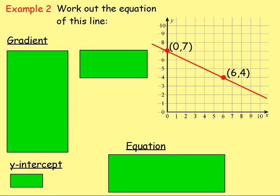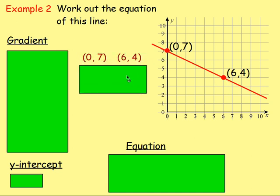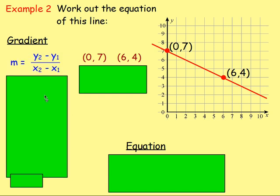Example 2: work out the equation of this straight line. We've got the red line drawn in with two points — 0,7 and 6,4. Let's start by writing down those two points. We need to work out the gradient first, using the formula y2 take away y1 over x2 take away x1. It helps to write out the points at the side and label x1, y1, x2, y2.